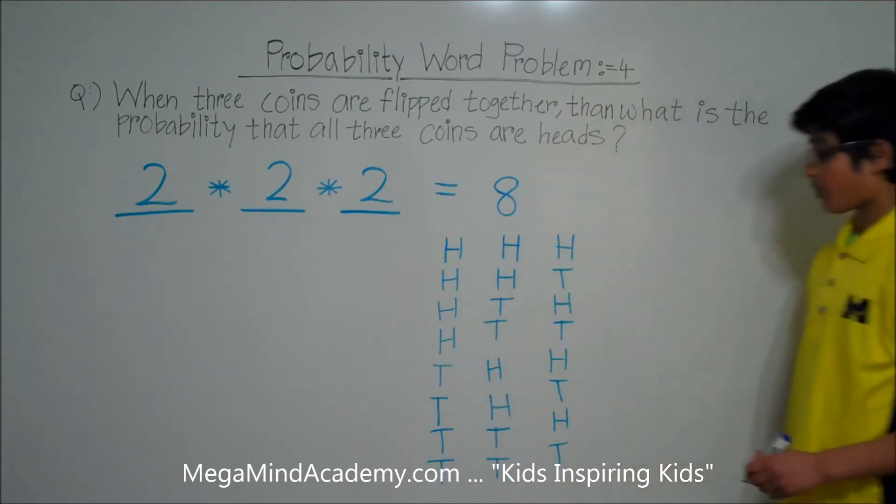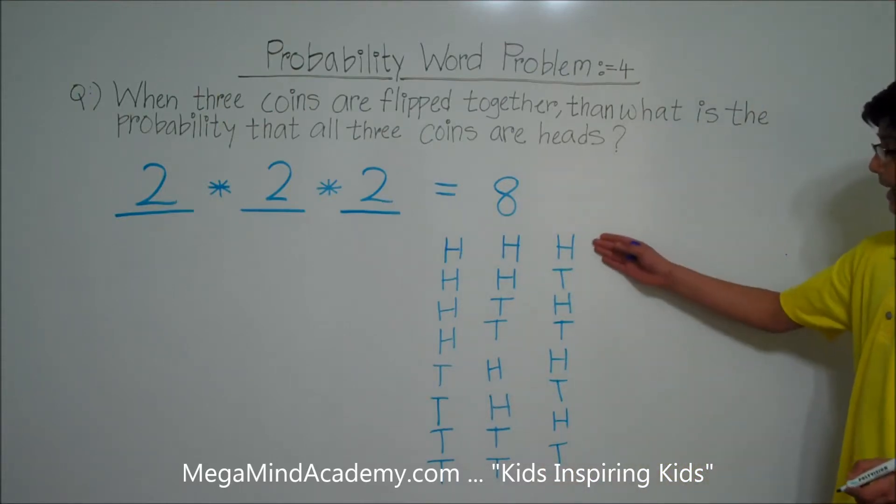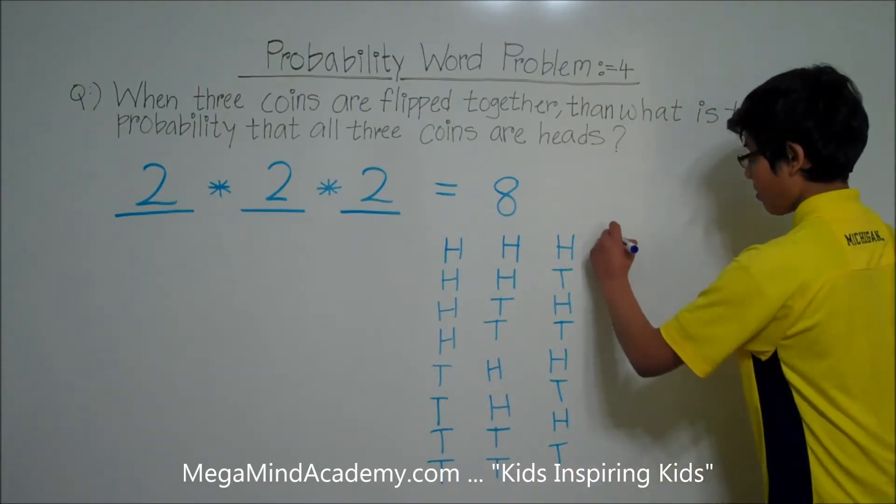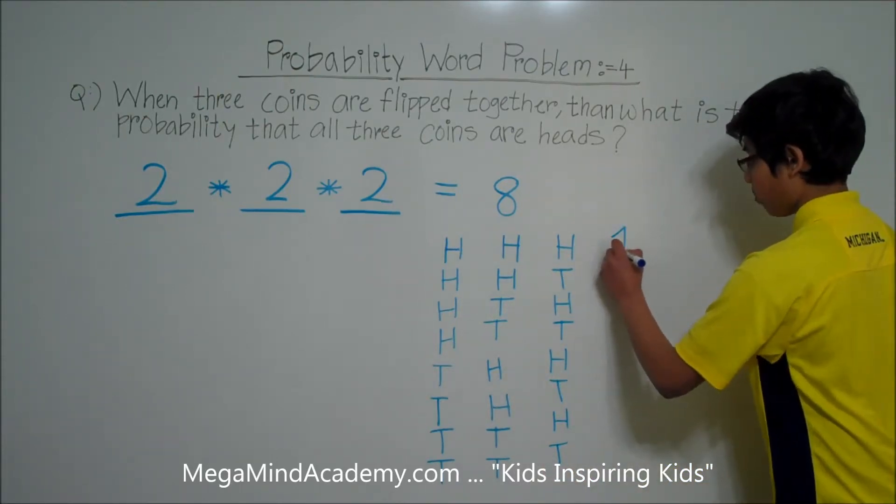So we have eight possible outcomes. This is outcome one.